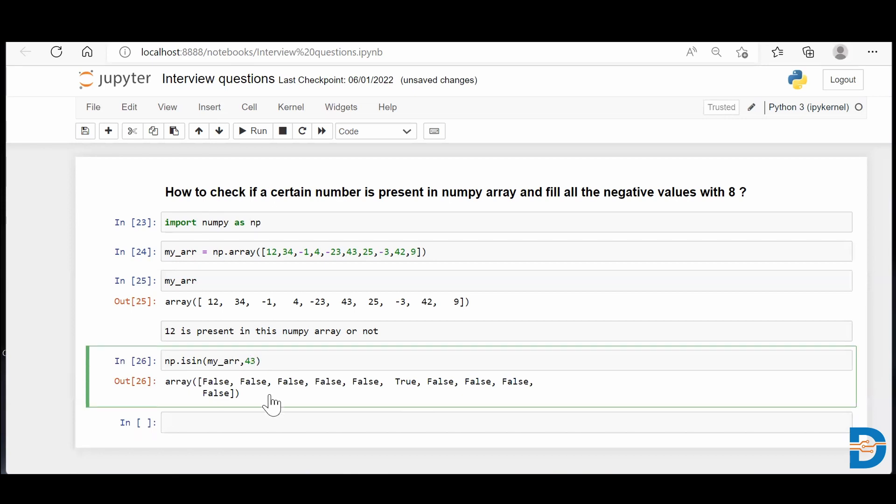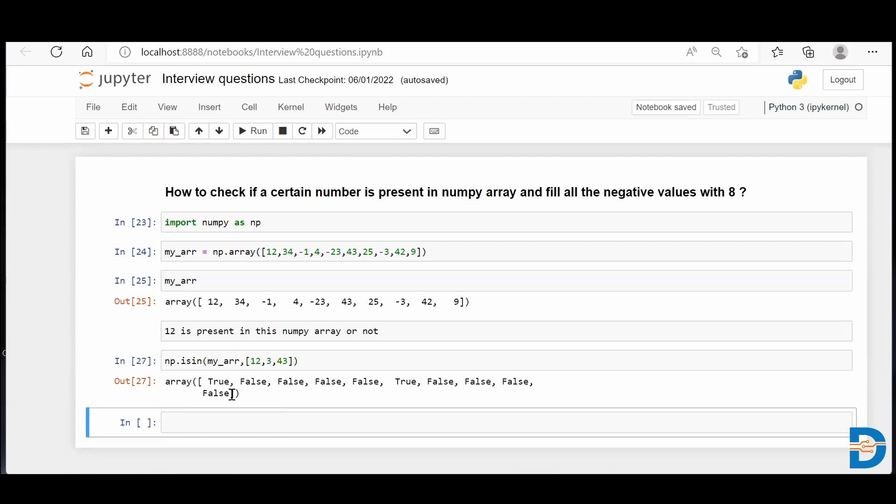Similarly, instead of giving one particular number, let's say if you give 12, 3, and let's say 43. So you're giving a list which is having three numbers: 12, 3, and 43. When you run it, it will check if any of the number is present in any of the position of your NumPy array. If it is, it will give you true and rest everything will become false. So we know that 12 and 43 are present in the NumPy array, so you'll get a true at this place and true at this space as well. Remaining everything is going to be false.